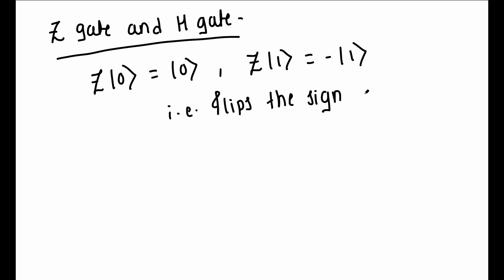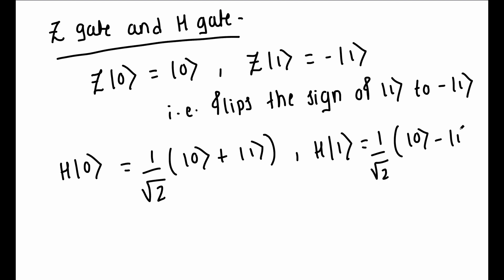There are another two gates, the Z gate and the H gate. The Z gate leaves ket 0 unchanged and flips the sign of ket 1 to minus ket 1. H gate acts on ket 0 to give 1 by root 2 ket 0 plus ket 1, and acts on ket 1 to give 1 over root 2 ket 0 minus ket 1.